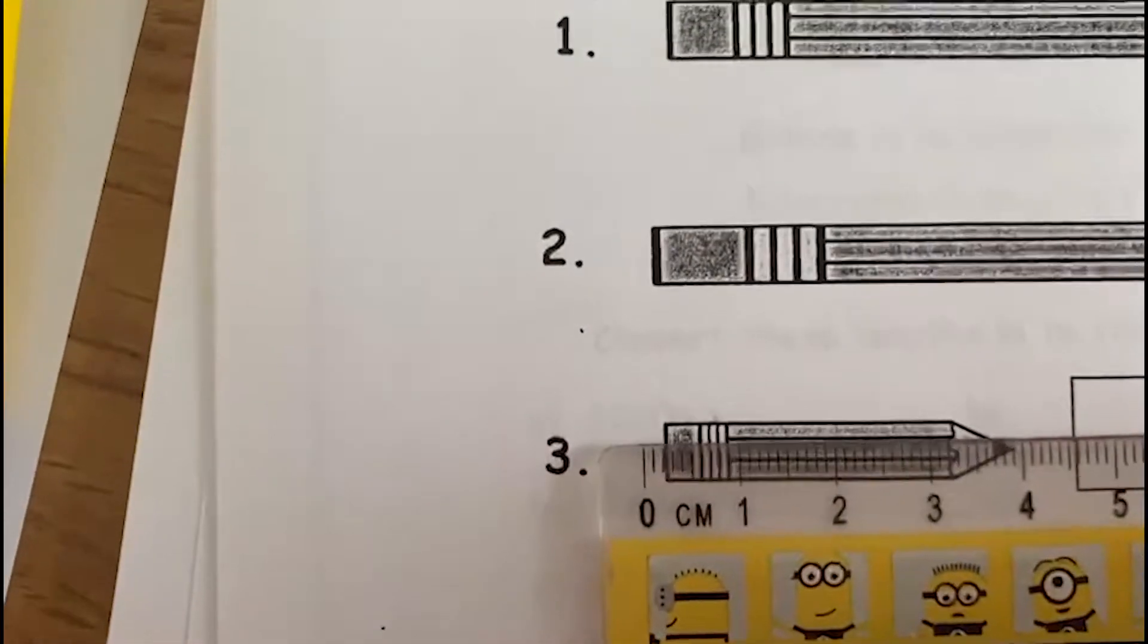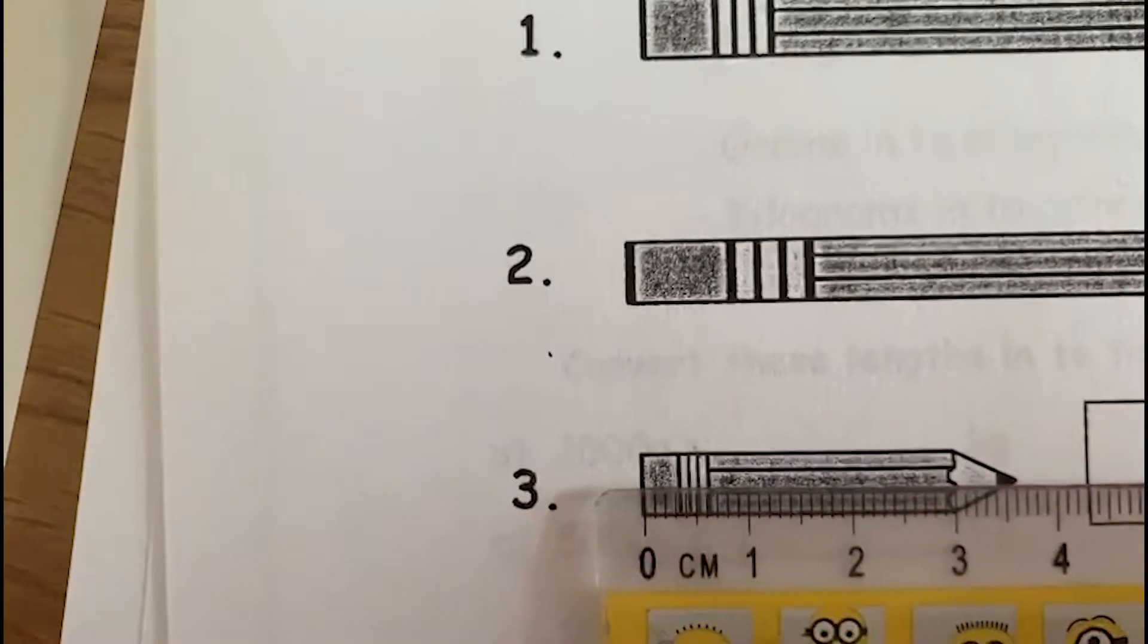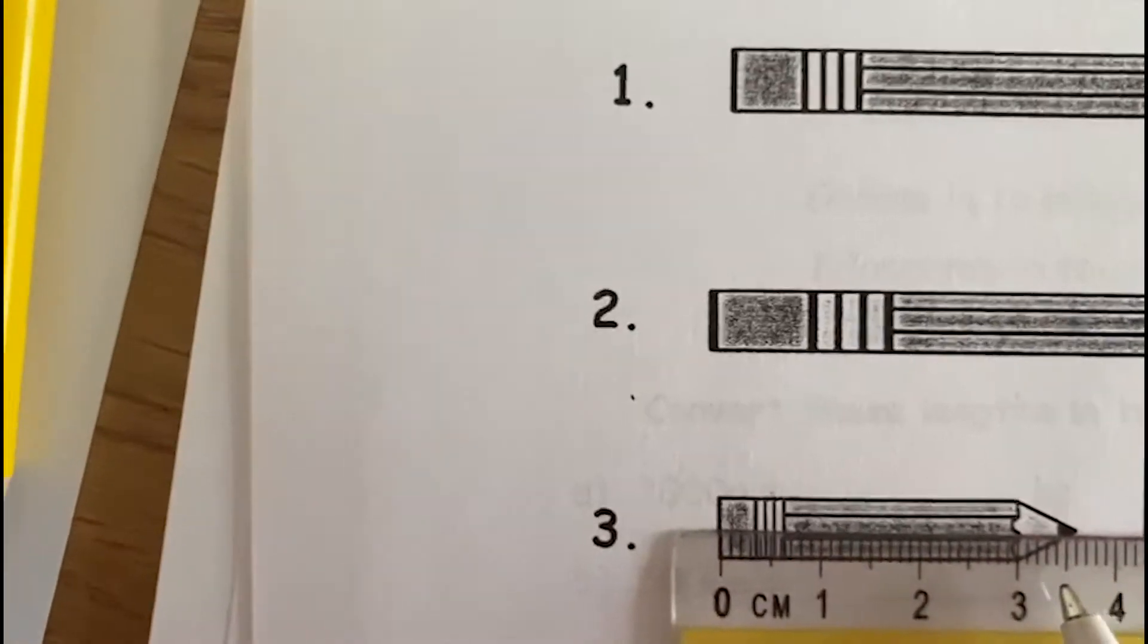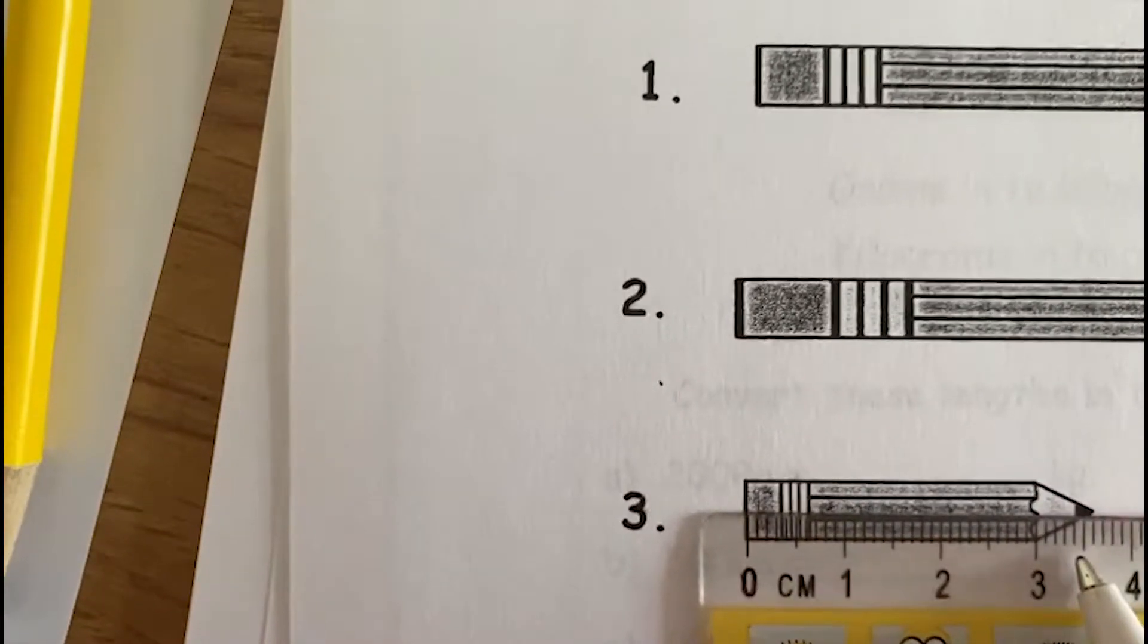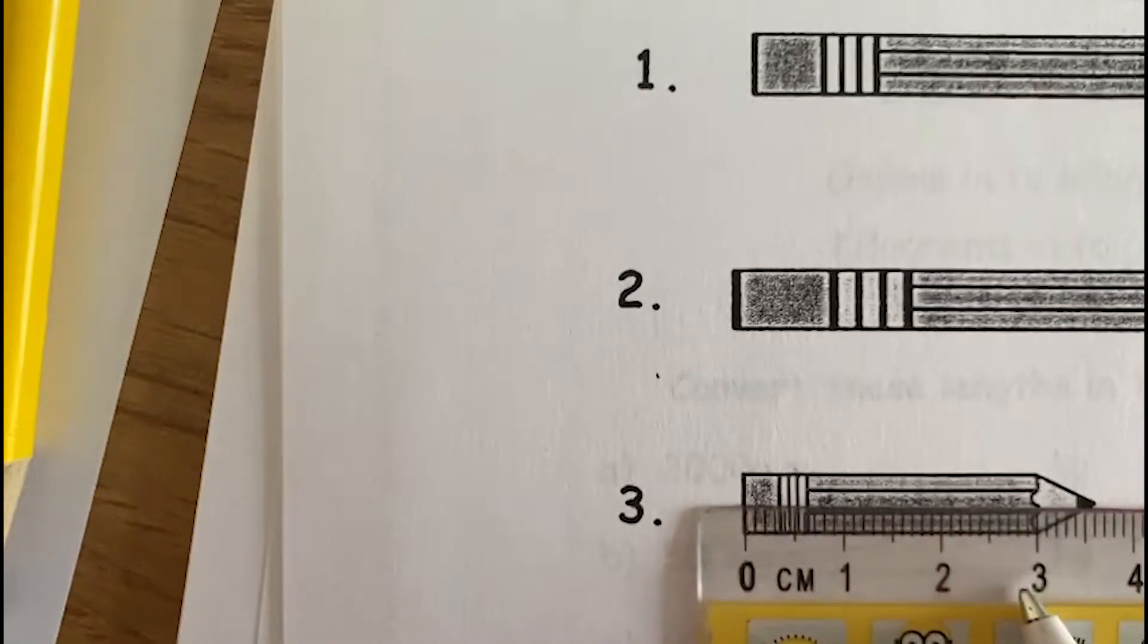And the next one, start from the zero. And I can see here is my midway. So that's five, six. So it's three centimeters.